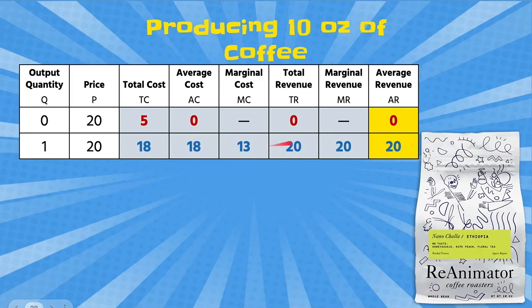We don't really need a separate calculation for average revenue — you're just carrying the price item over to average revenue. Something interesting to note: in this particular example the price was $20 for total revenue, marginal revenue, and average revenue, but that is not always going to be the case. Please note that this only occurs in this specific example.